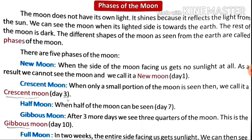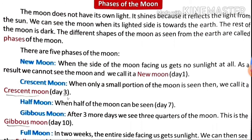The next topic is phases of the Moon. The Moon does not have its own light. It shines because it reflects the light from the Sun. We can see the Moon when its lighted side is facing towards the Earth.